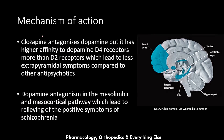Clozapine antagonizes both serotonin and dopamine. Regarding dopamine, it has higher affinity for dopamine D4 receptors compared to D2 receptors, which leads to fewer extrapyramidal symptoms compared to other antipsychotics. Most other antipsychotics preferentially antagonize D2 receptors, while clozapine's preference for D4 antagonism results in less extrapyramidal symptoms.